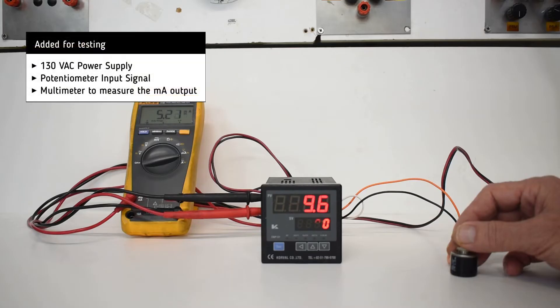For testing, we add a 140V AC power supply, a potentiometer, and a multimeter in order to measure the milliamp output.